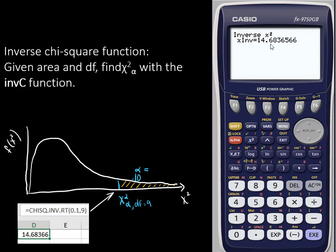That's how to find a chi-square critical value when given area and degrees of freedom.